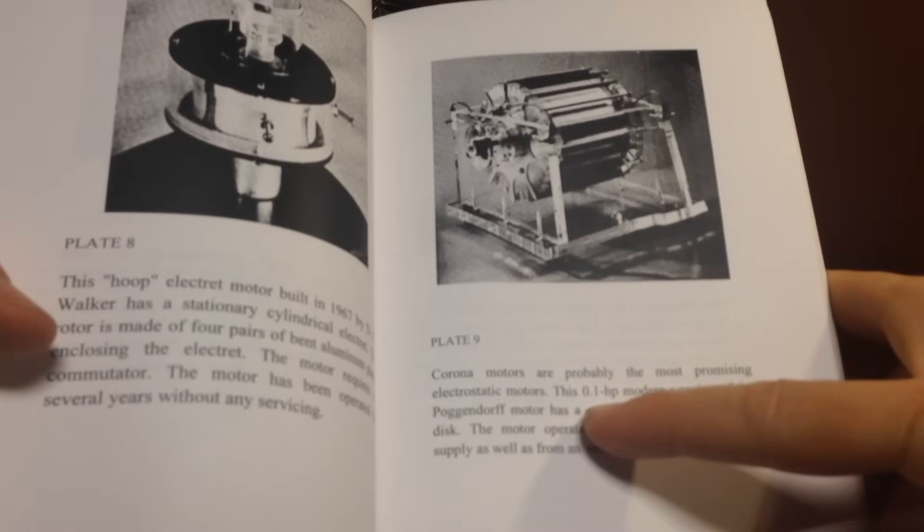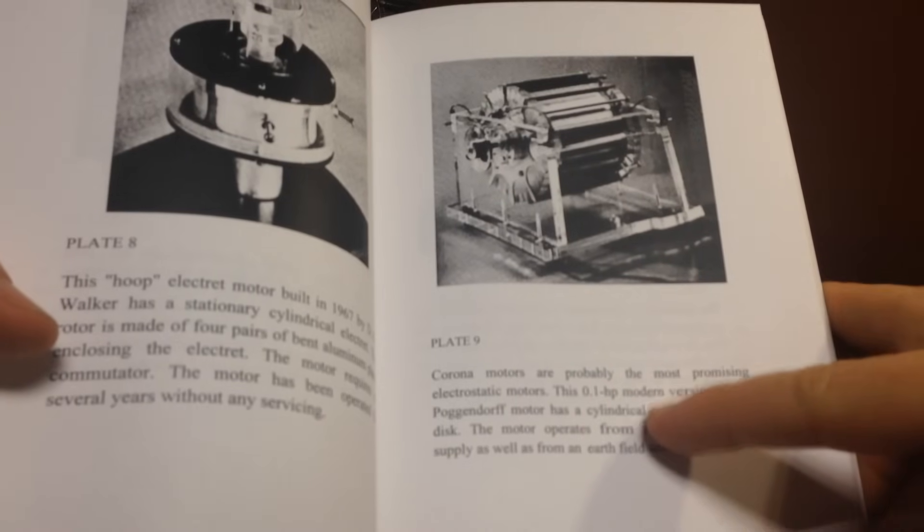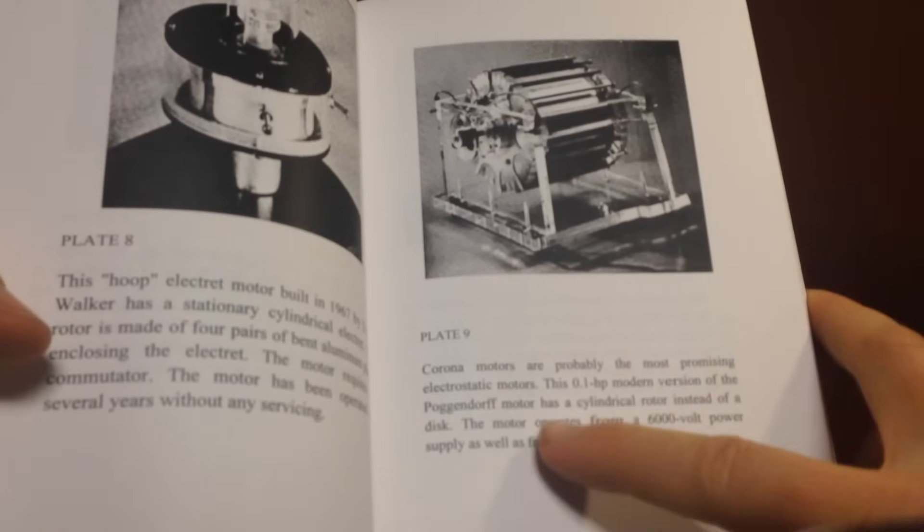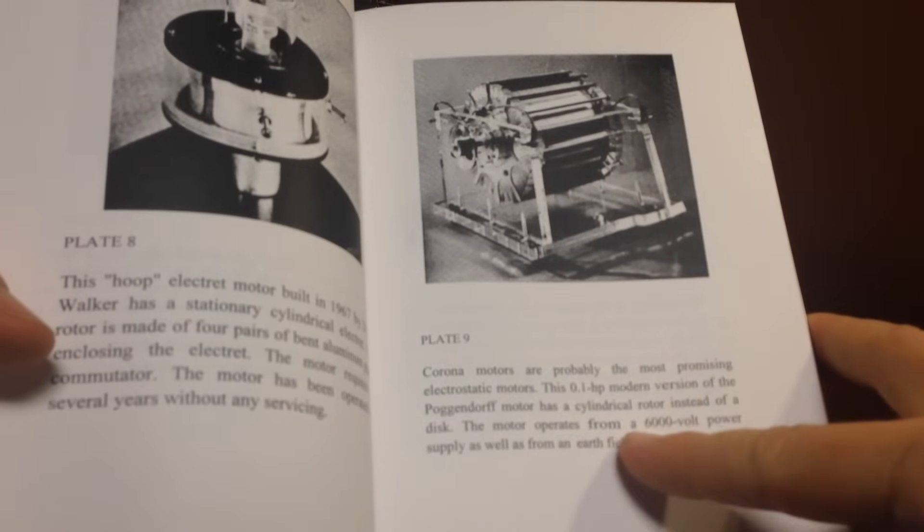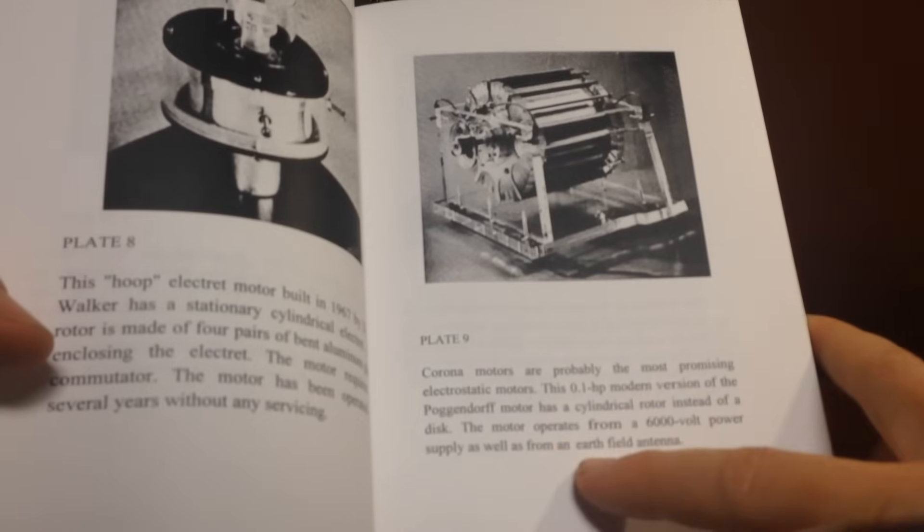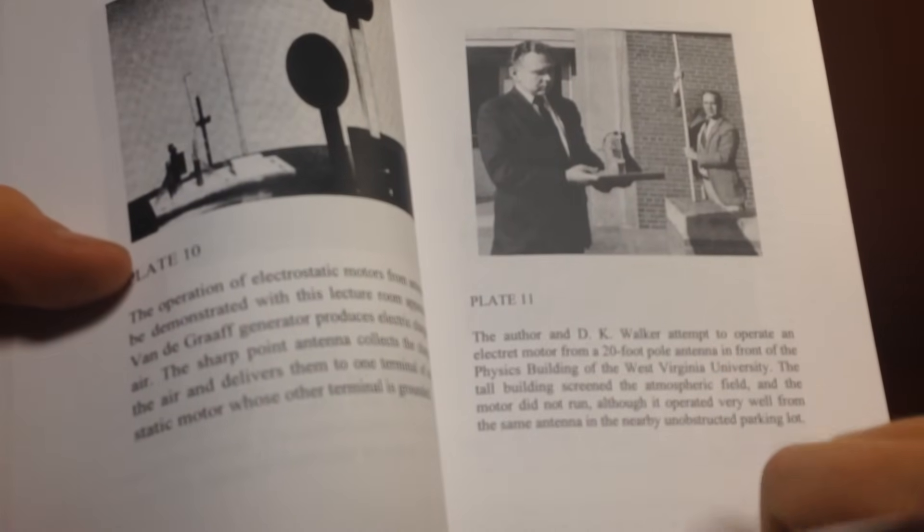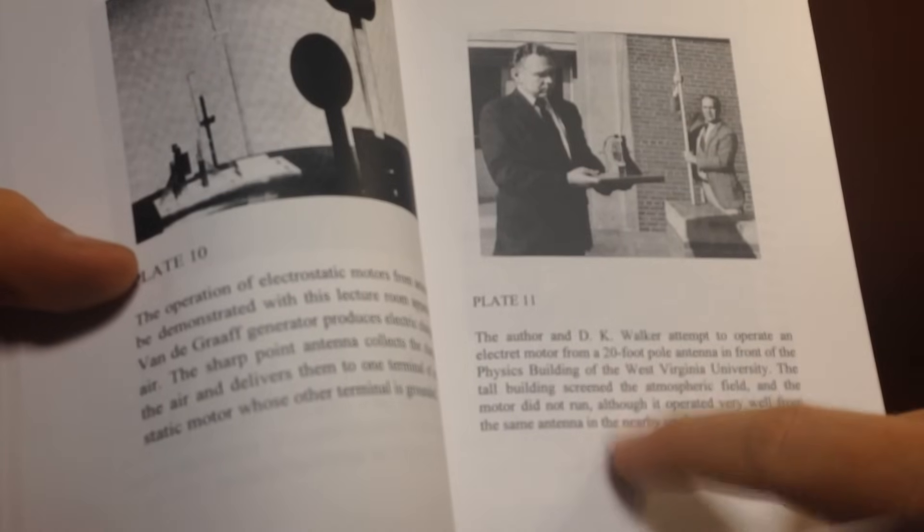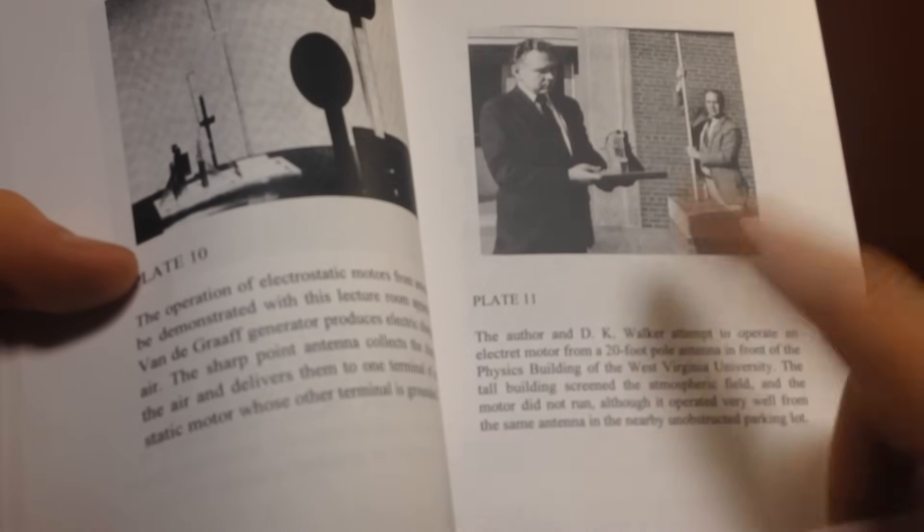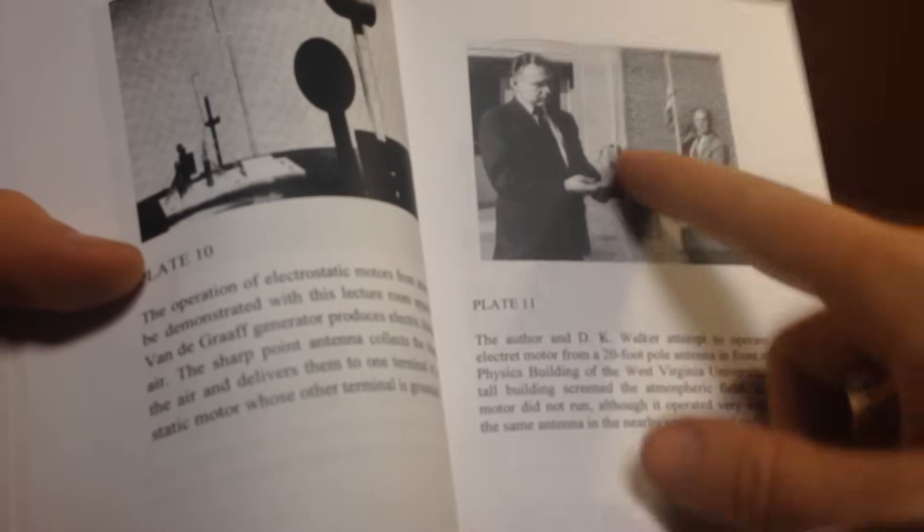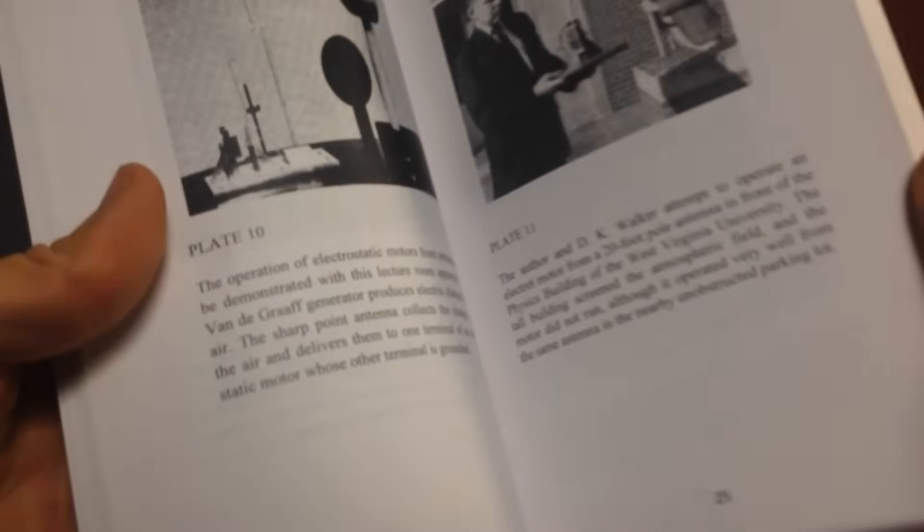You can see there's a lot of cool diagrams, a lot of cool drawings. This motor here generated 0.1 horsepower, which for an electrostatic motor is actually quite a lot of power. He goes on to say that this motor operates from a six to six thousand volt power supply, as well as from an earth field antenna. On the next page he shows this little motor that they were able to operate from a 20-foot pole. They tried to do it in front of the physics building at West Virginia University, and in front of the building it would not run, but out in the parking lot it ran very well.